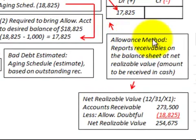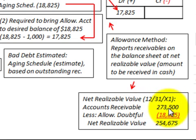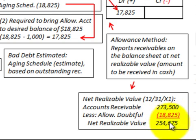With the allowance method, it reports receivables on the balance sheet at net realizable value — the amount that would actually be received in cash. So what is our net realizable value at year-end 12/31/X1? We have accounts receivable at $273,500 less our allowance for doubtful accounts of $18,825, leaving us with a net realizable value of $254,675.